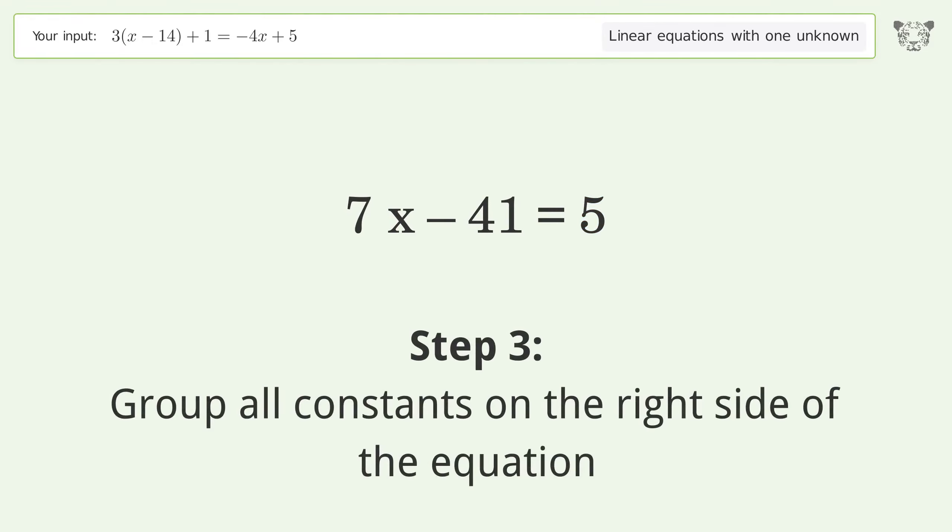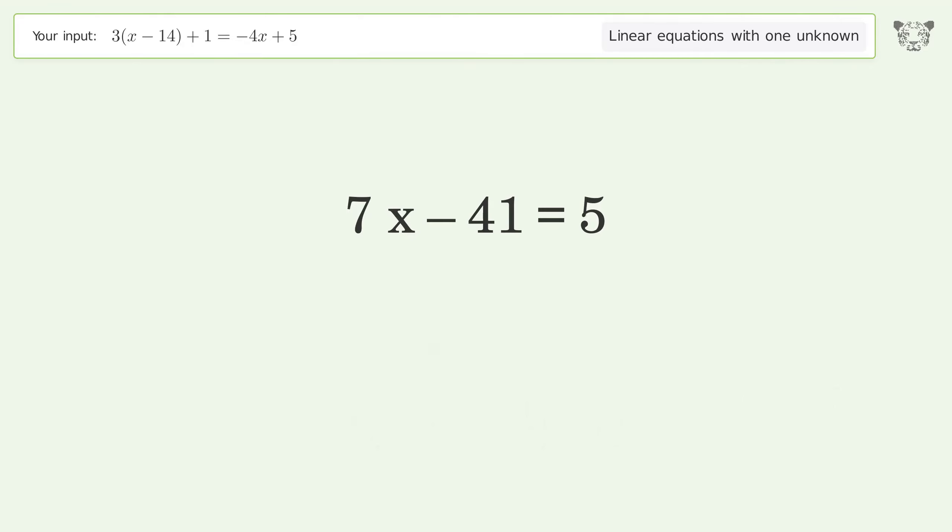Group all constants on the right side of the equation. Add 41 to both sides. Simplify the arithmetic.